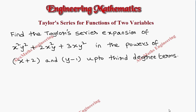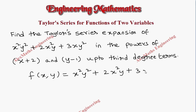Hi students, this is Alex. In this video we are going to find the Taylor series expansion for the given function in terms of (x+2) and (y-1) up to third degree terms. The given function is f(x,y) = x²y² + 2x²y + 3xy². The value of a we take as the opposite sign from (x+2), which is -2, and the value of b from (y-1), which is 1.